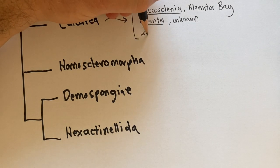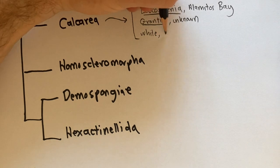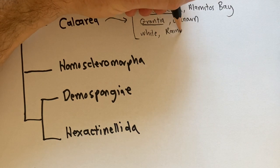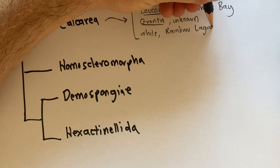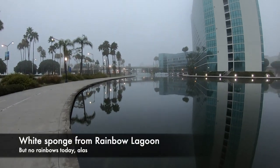Next up is a sponge that is very abundant in Rainbow Lagoon in downtown Long Beach. I don't know its name, we'll key it out at the end of this lab. For now, we can just call it the White Sponge from Rainbow Lagoon.